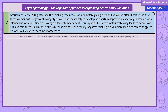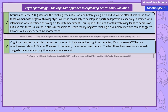We have to be careful with this evaluation. If you're asked to outline and evaluate cognitive explanations for depression, that needs to be our focus, not treatment. But the cognitive theories that explain depression have led to highly effective cognitive therapies. March showed CBT had an effectiveness rate of 81% after 36 weeks of treatment — the same as drug therapy. These treatments have been successful in helping people recover from depression, and the fact that they're successful suggests the underlying cognitive explanations are valid.